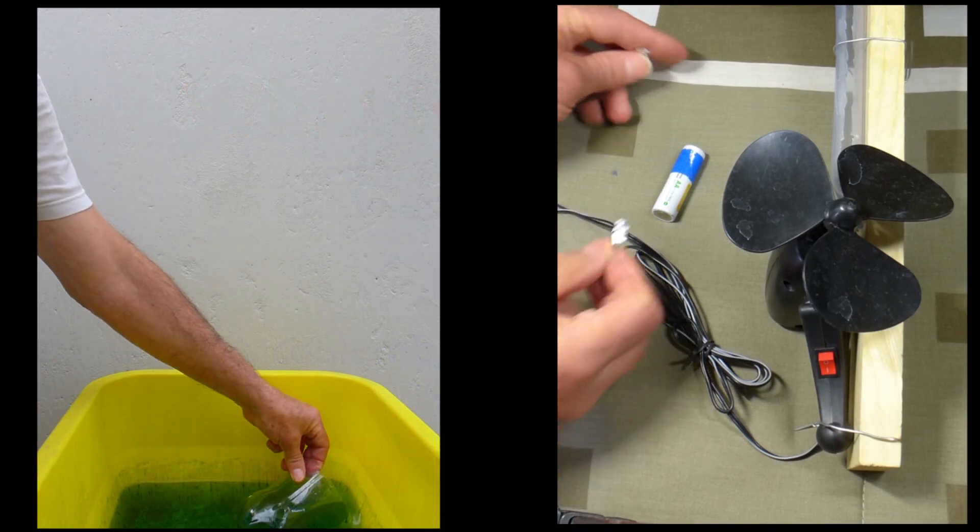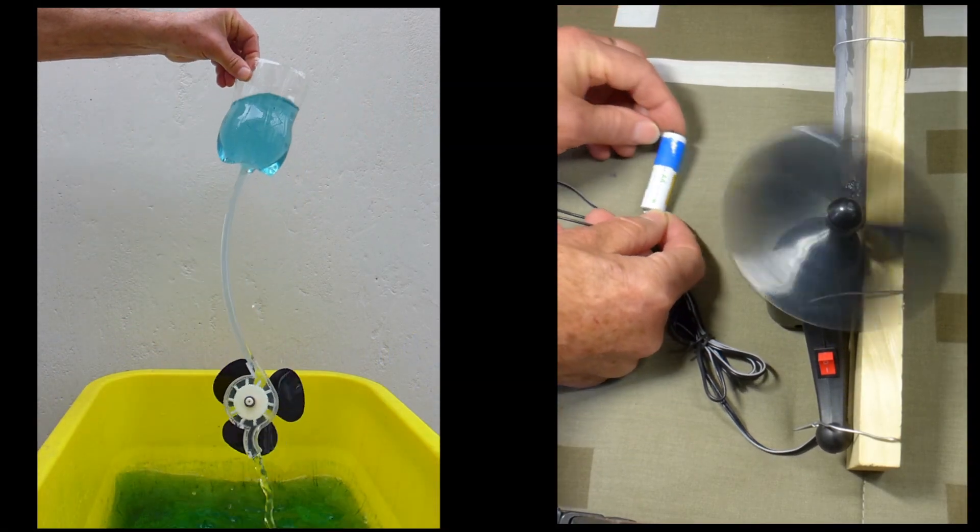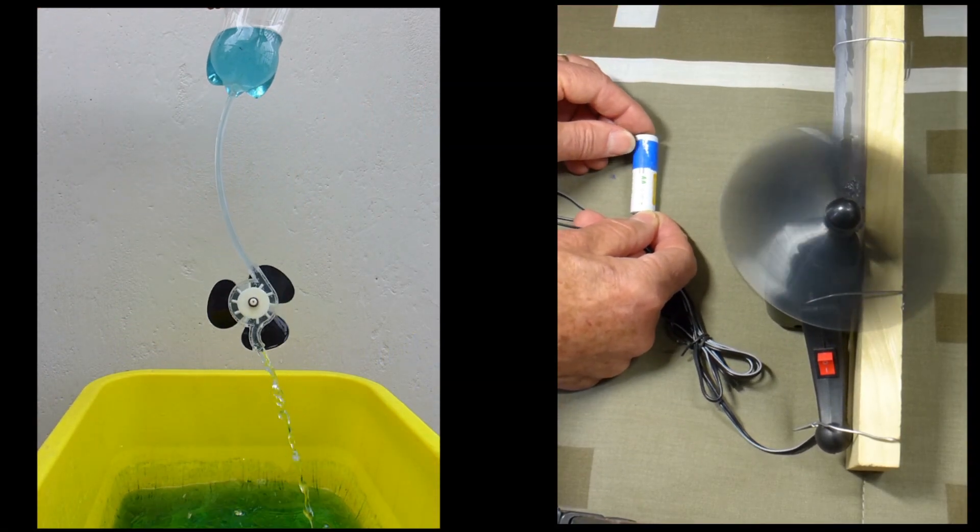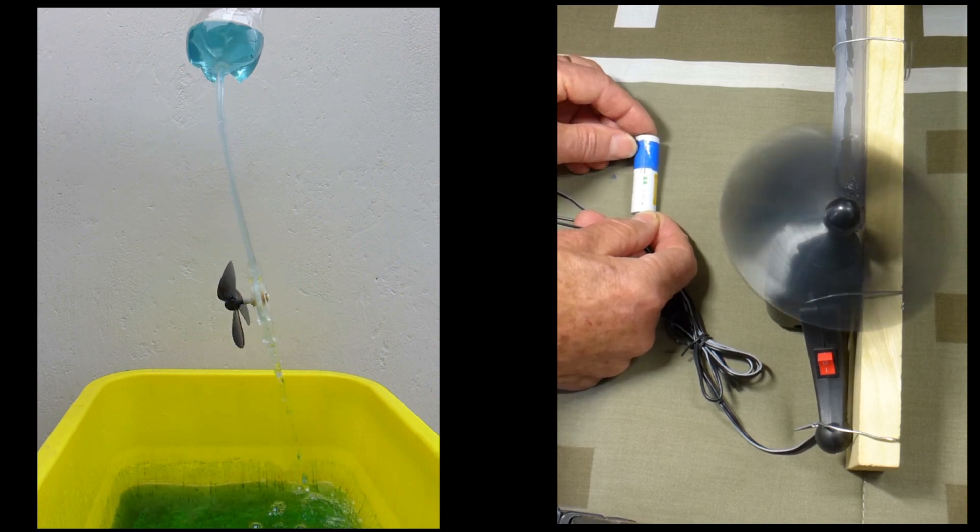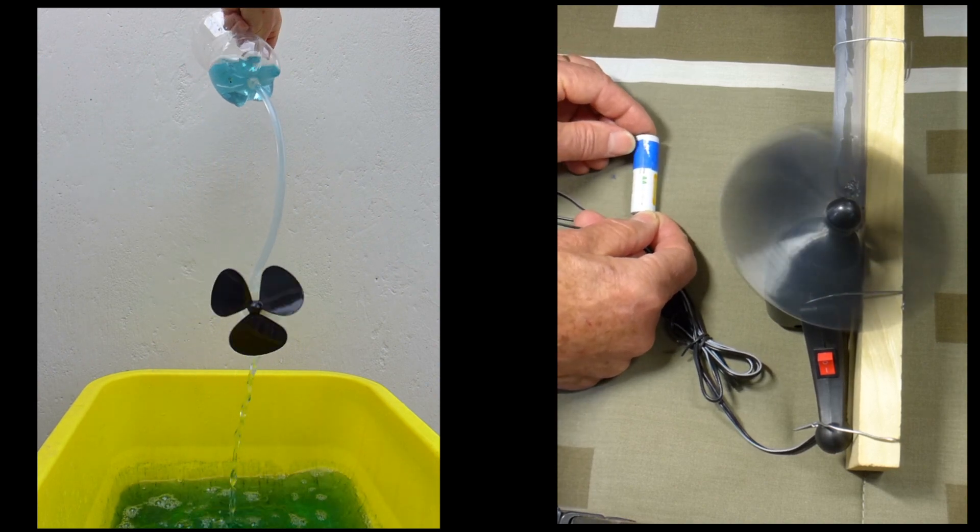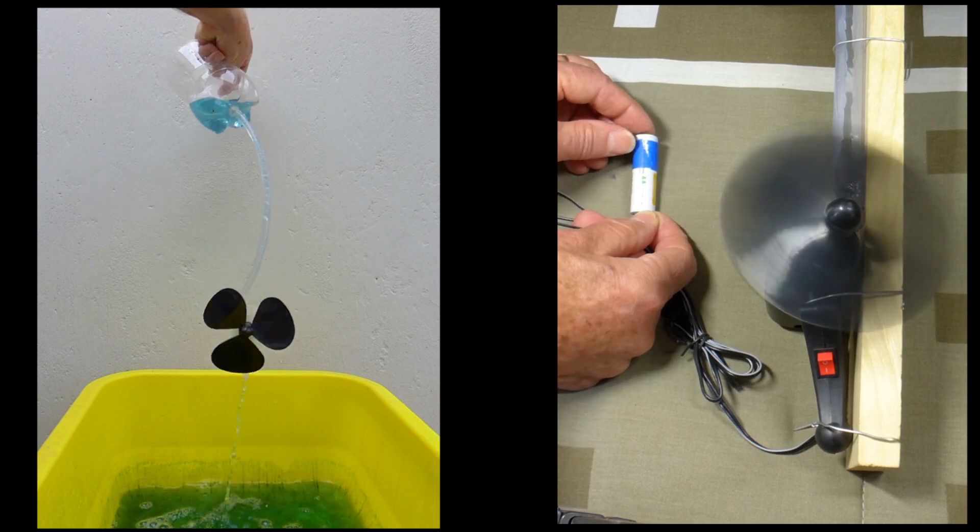The behavior of water in a gravitational field is strikingly similar to that of electrons in an electric field. This is the key to seeing, understanding and discovering why, when you move electrons, you get wonderful things.